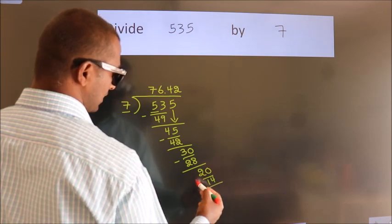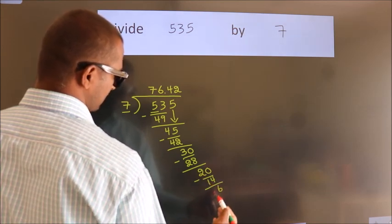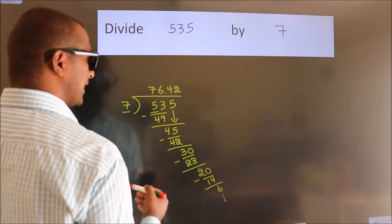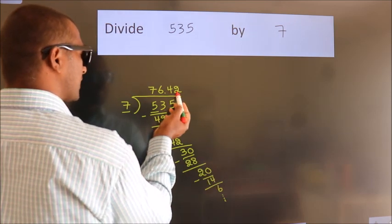Now we subtract. We get 6. And the division continues. It is enough if we do up to 2 decimal places.